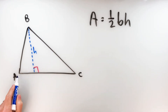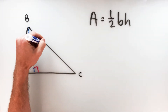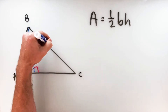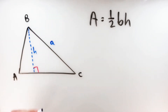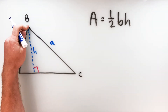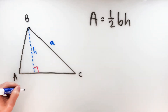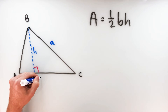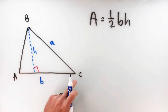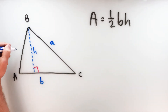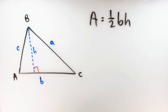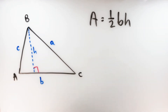We're going to write the sides with a lowercase letter of the vertex opposite that side. So if this is angle A, we're going to call the opposite side lowercase a. Vertex B gives us side b, and then lowercase c over here.